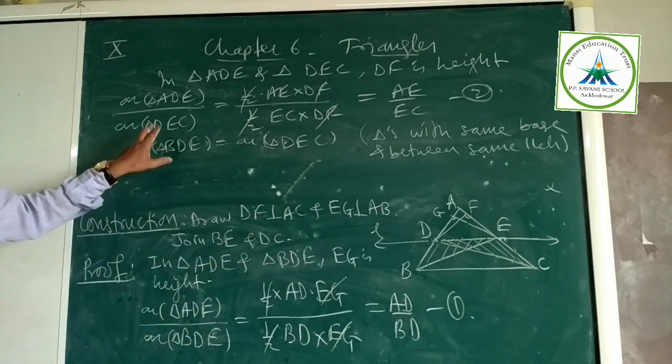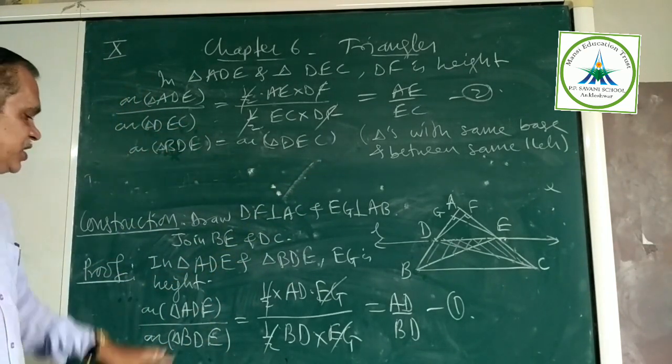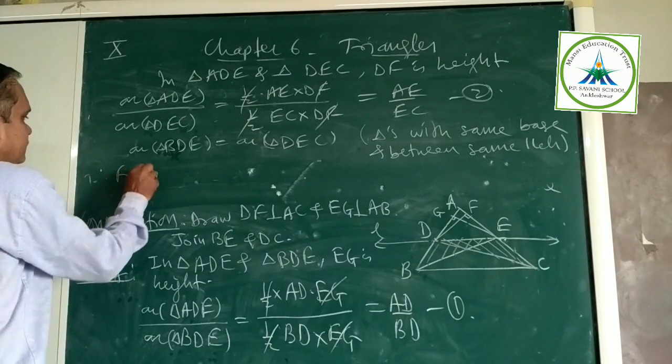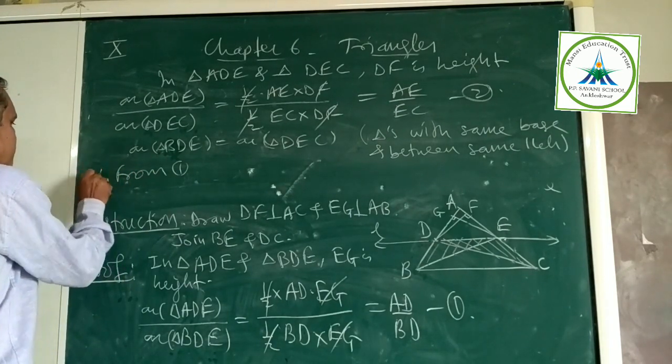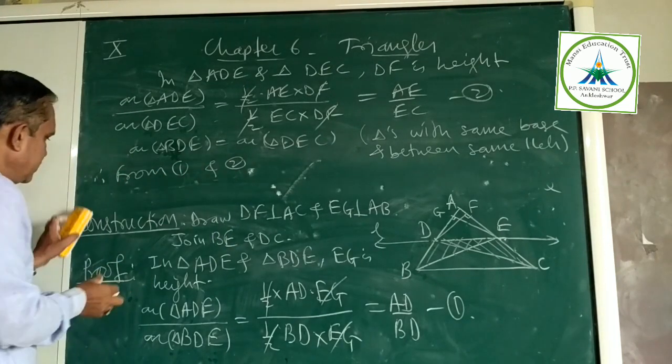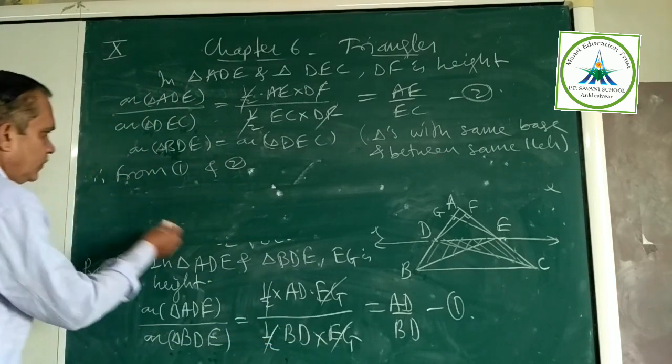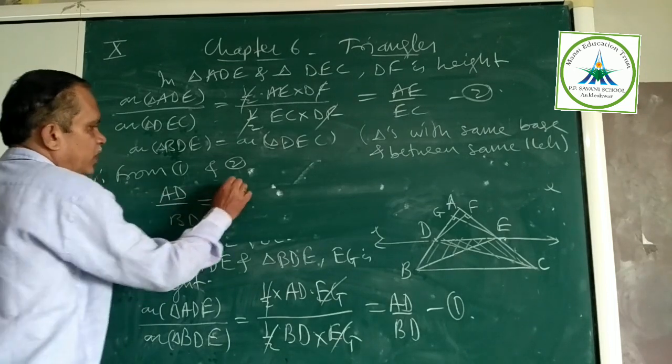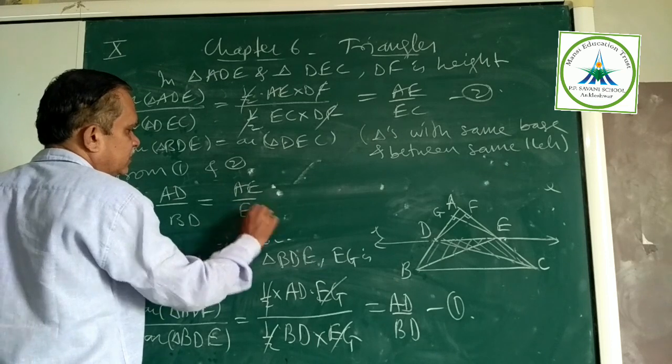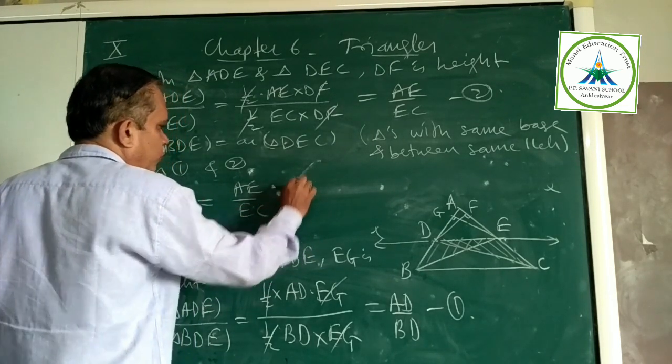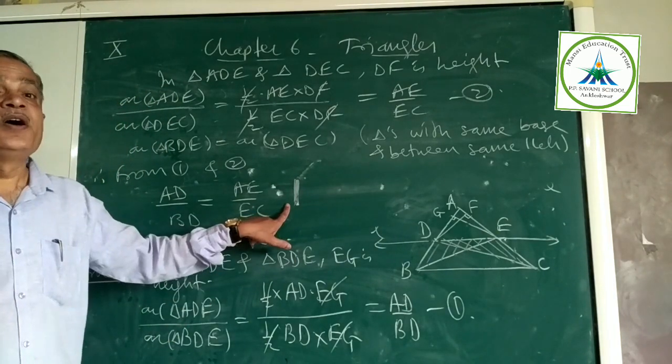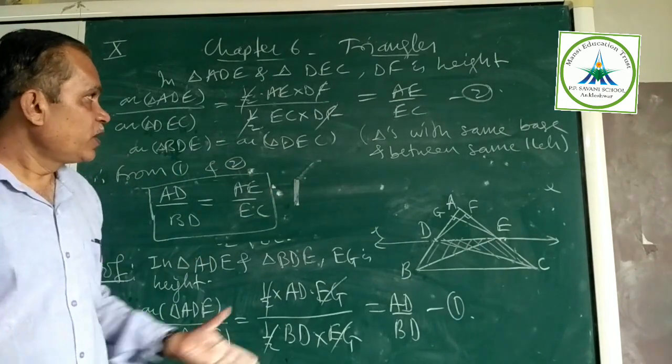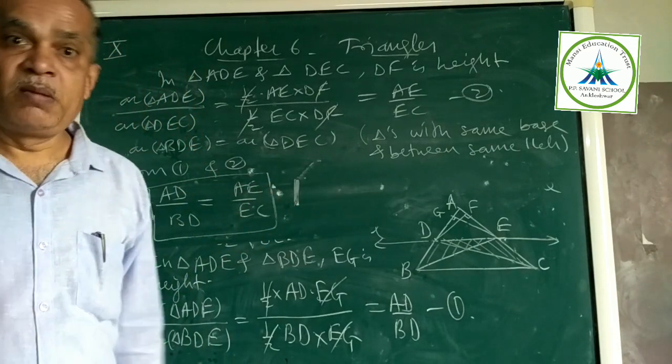Therefore, I will replace it. From one and two, from equations one and two, we are going to replace area DEC with area BDE. Hence area ADE upon BDE equal to AE upon EC. From one, two, three and four. We got it proved.